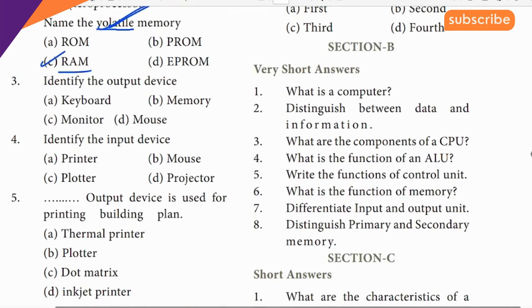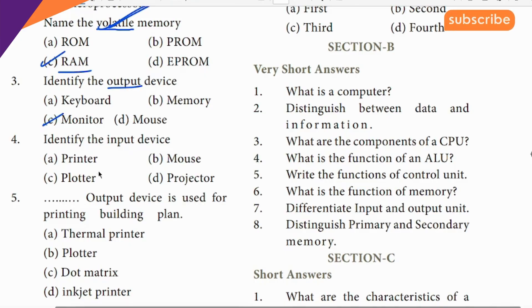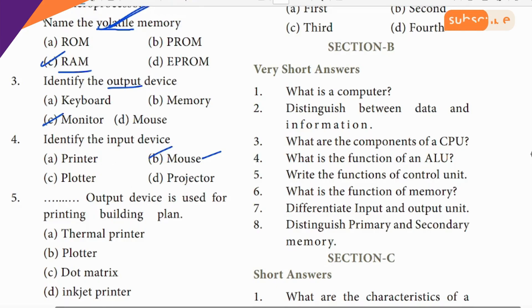Third question: output device. Keyboard is an input device. Mouse is an input device. Monitor is an output device. Projector is an output device. Plotter is an output device. Printer is an output device. Mouse is input device.